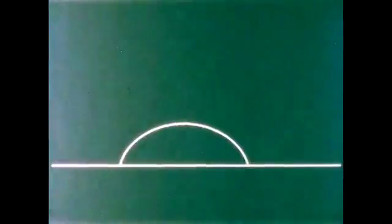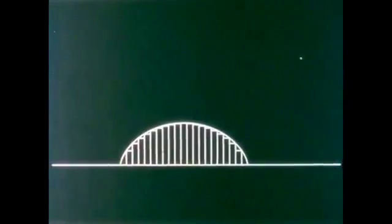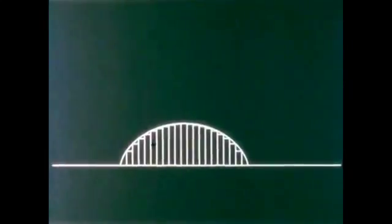This method of considering areas as made up of lines was only one of the methods used at the time. There were others being developed that look far more like our modern approach to integration using strips and rectangles. But for the moment, we turn our attention to the tangent problem. Torricelli and Roberval found not only the area under a cycloidal arc, but they also found tangents to the cycloid curve.